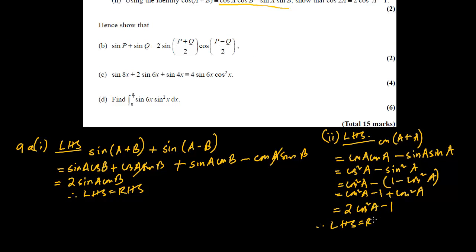The next part says 'hence', which usually means we should use the previous identities. We need to show that sin P + sin Q = 2 sin(something) cos(something). Looking at the previous sum, sin(A+B) + sin(A−B) = 2 sin A cos B — this question 9A1 and this new one are exactly the same structure.